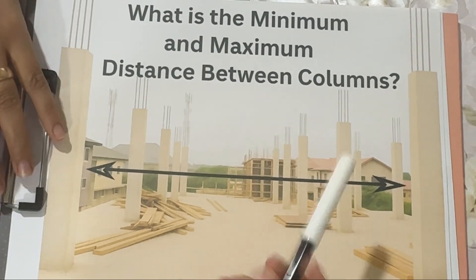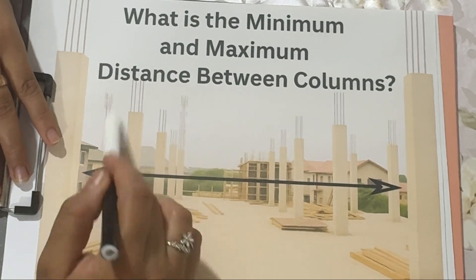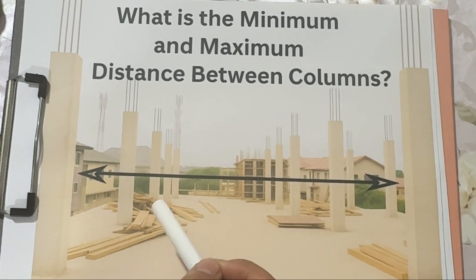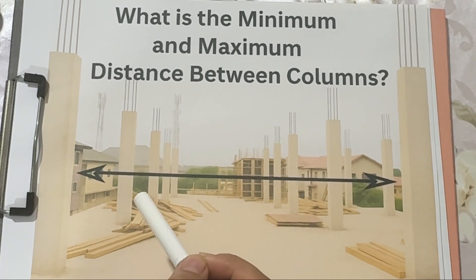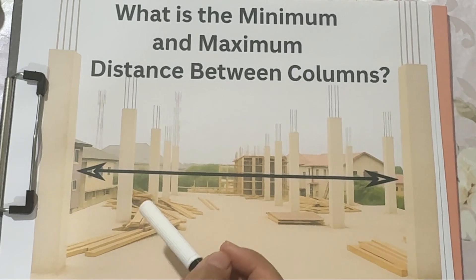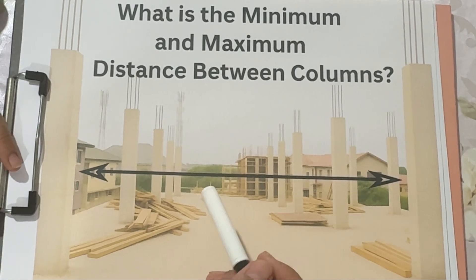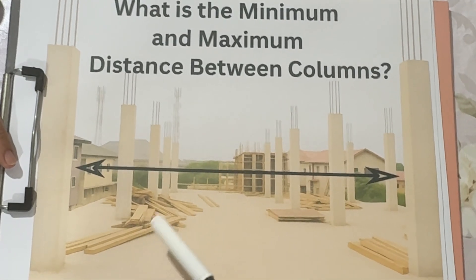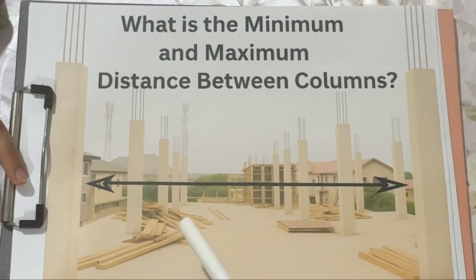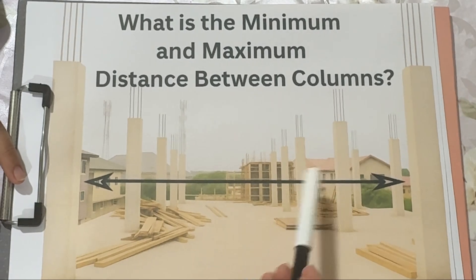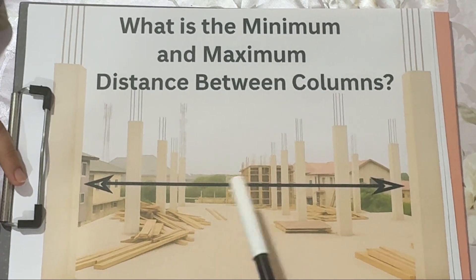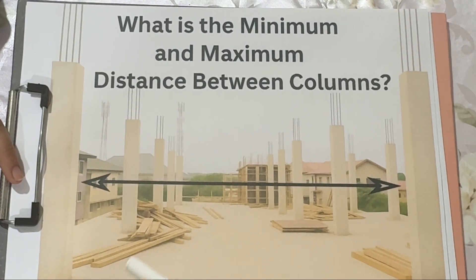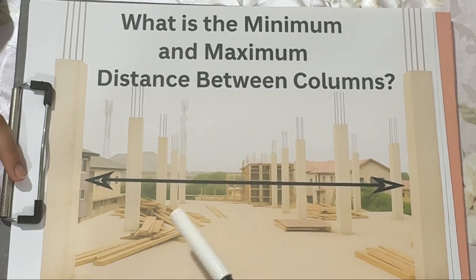Part 1: What are columns? Let's start with the basics. Columns are those vertical members that carry the weight of the structure above — the beams, slabs, walls — and transfer it down to the foundation. They are like the legs of a table. If they are too close, you waste material, and if they are too far apart, the table might collapse. So engineers need to find that sweet spot.